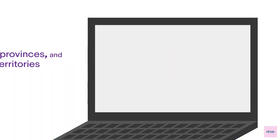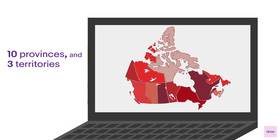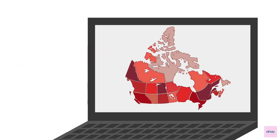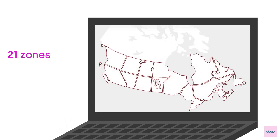Within each region, there are provinces and territories, and provinces are further divided into zones. Most provinces include two zones: urban and rural.